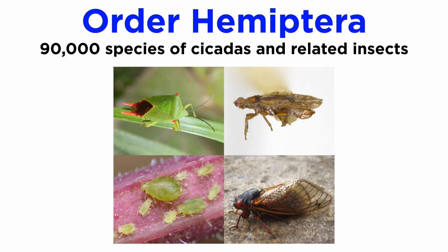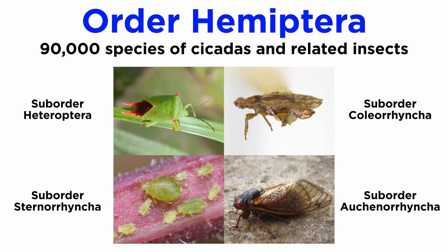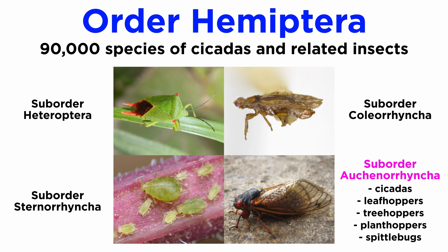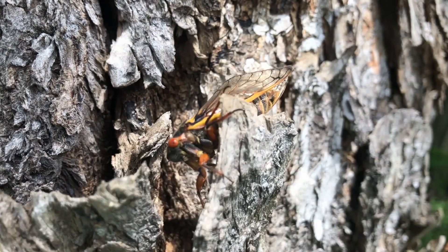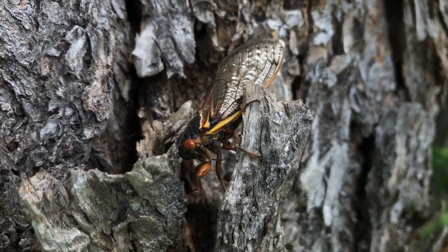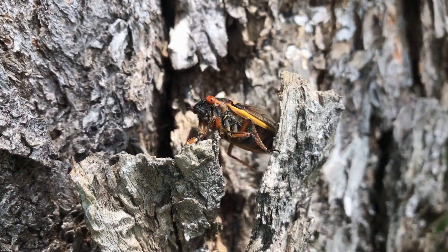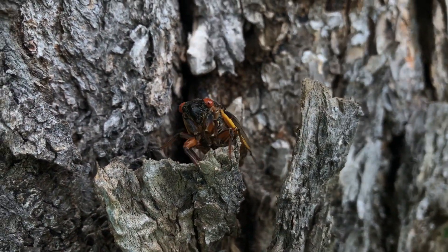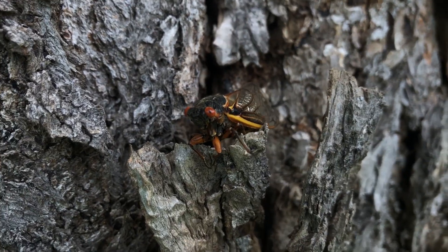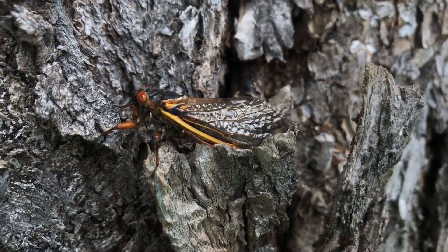Order Hemiptera is the fifth largest insect order, containing over 90,000 species. They are generally split into four sub-orders. Auchenorrhyncha includes over 40,000 species of cicadas, leafhoppers, treehoppers, planthoppers, and spittlebugs. They are distributed around the world where they feed on plants. Many species are capable of producing either audible sounds, like the cicadas, or substrate vibrations, like the leafhoppers.